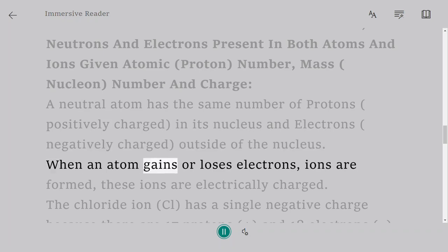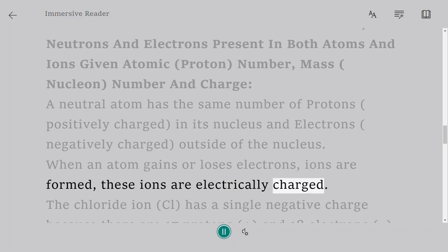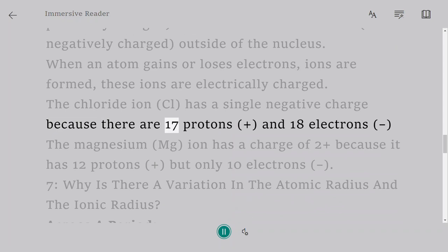When an atom gains or loses electrons, ions are formed. These ions are electrically charged. The chloride ion, Cl-, has a single negative charge because there are 17 protons (+) and 18 electrons (-).